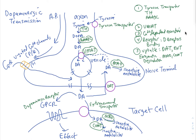Once the tyrosine is inside, it is hydroxylated to form DOPA by the enzyme tyrosine hydroxylase, abbreviated TH. DOPA stands for dihydroxyphenylalanine — tyrosine is a hydroxylated phenylalanine, so adding an extra hydroxyl group gives it two hydroxyls. DOPA is then decarboxylated to form dopamine by the enzyme aromatic amino acid decarboxylase.